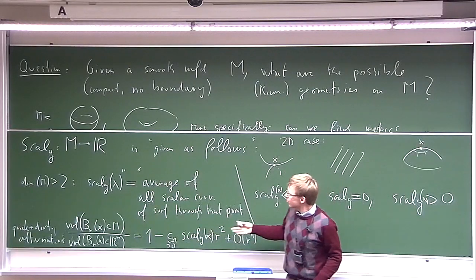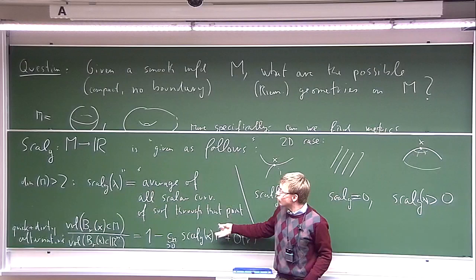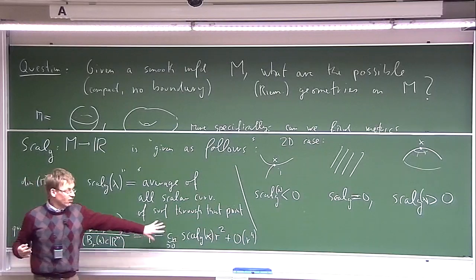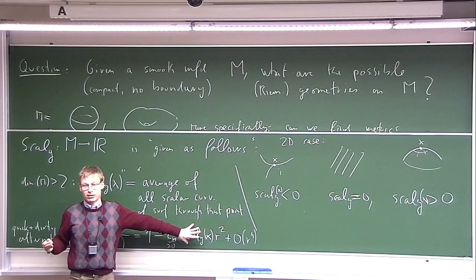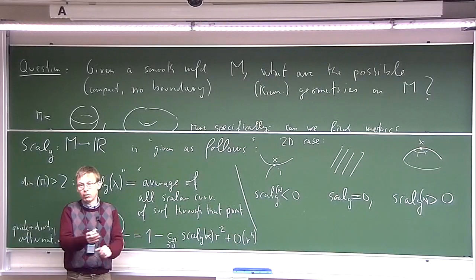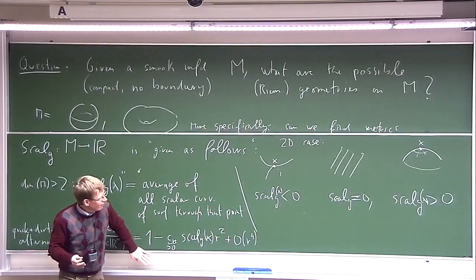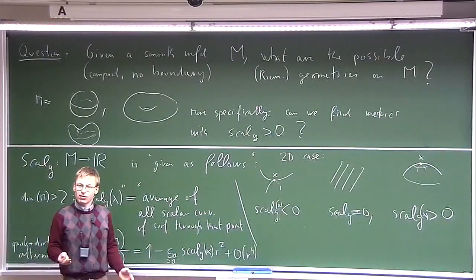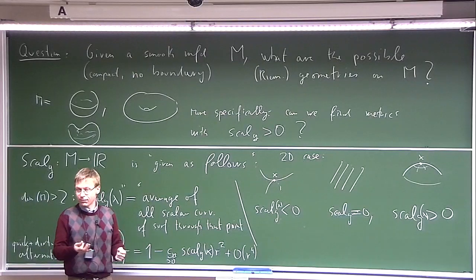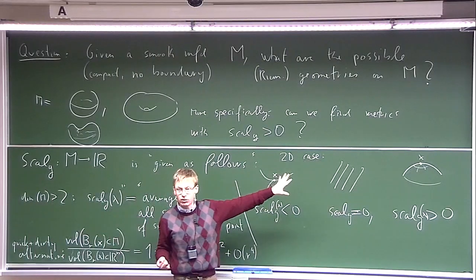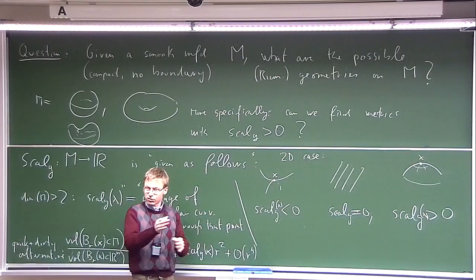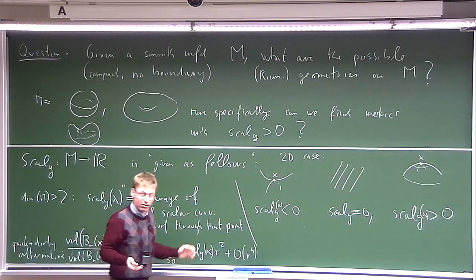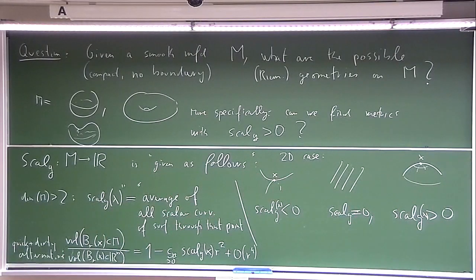This tells us that scalar curvature is a rather weak invariant — it doesn't measure much. It just measures the volume expansion of small balls. Unless we ask about the global consequences that positivity of the scalar curvature would have. In dimension 2 you might expect global consequences, but in dimension 27, given its weak properties, you might be more surprised if there are any.